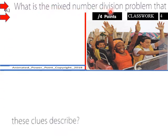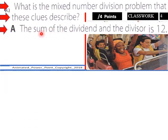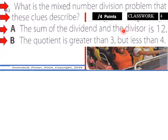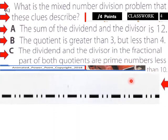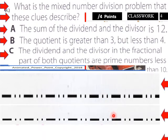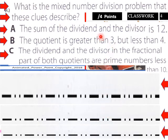Next: what is the mixed number division problem that these clues describe? Clue one — the sum of the dividend and the divisor is 12. Clue two — the quotient is greater than three but less than four. Clue three — the fractional parts of both the dividend and the divisor are prime numbers less than 10. Teachers, give your students about five minutes to work on this — see you in five.